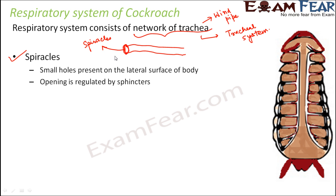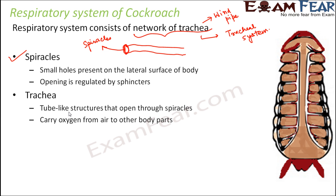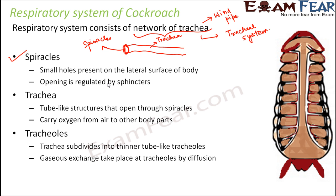Trachea are tube-like structures that open through spiracles. The job of the trachea is to carry oxygen from the air to other body parts. The air which comes inside the body of the cockroach through the spiracle then passes through these tube-like structures called trachea.